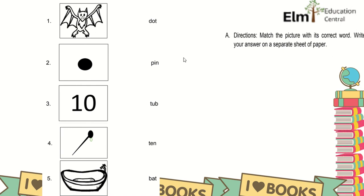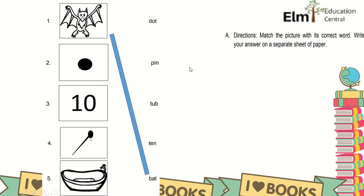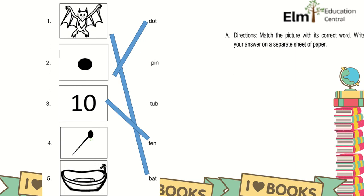Another activity: match the picture with its correct word. Write your answer on a separate sheet of paper. These words are in CVC pattern. Number 1 is bat, number 2 is dot, number 3 is pen, number 4 is spin, and number 5 is tub. So these are all in CVC pattern.